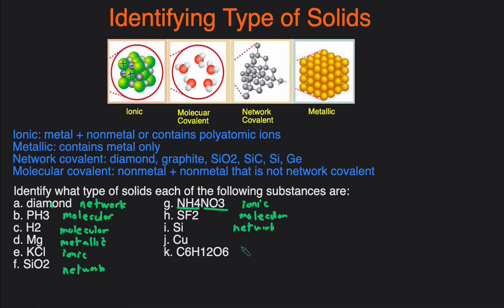Cu. Cu is just a metal, so that would be metallic. And the last one, C6H12O6—all of these are non-metals and they're not network, so then they must be a molecular compound.